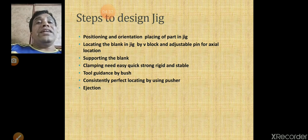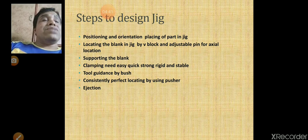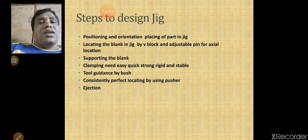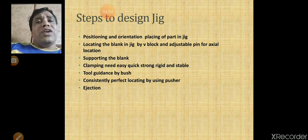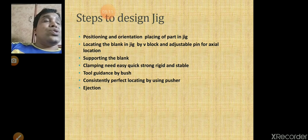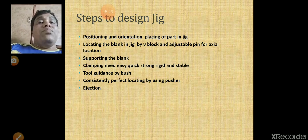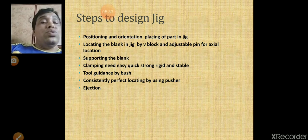Location plays an important role. Supporting the blank is also very important — guide blocks are sometimes used to support the jig. The 3-2-1 principle restricts 9 degrees of freedom; the remaining degrees of freedom are restricted by clamping. Clamping holds the workpiece inside the jig so it cannot move. Clamping should be quick for loading and unloading, and should be strong and rigid. Bushes are used for guiding the tool.